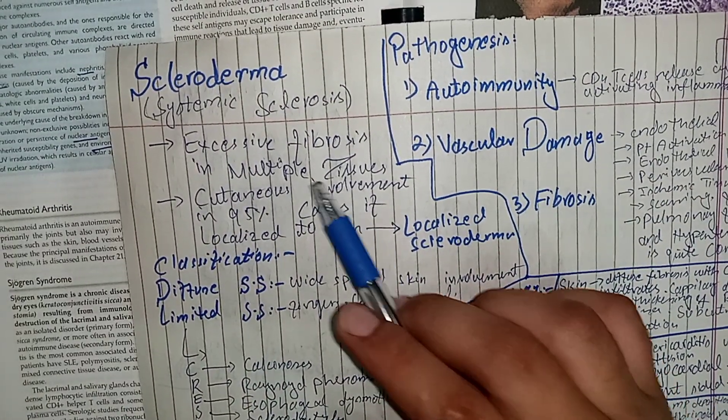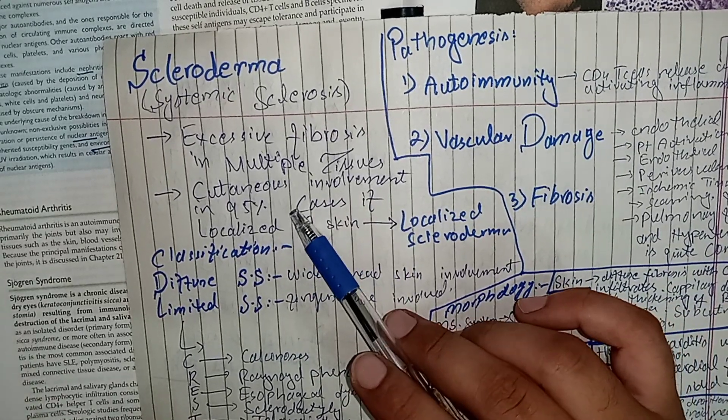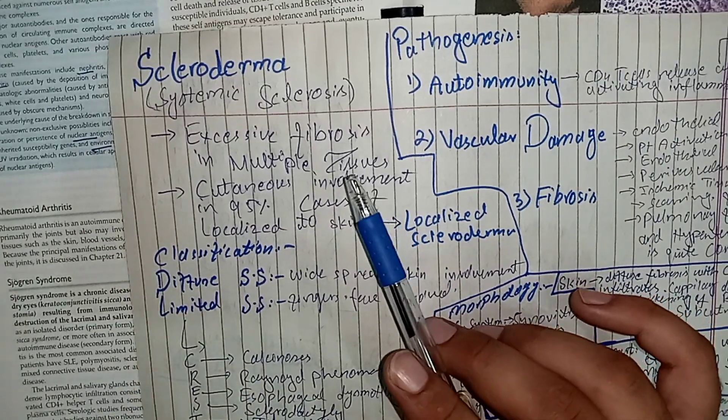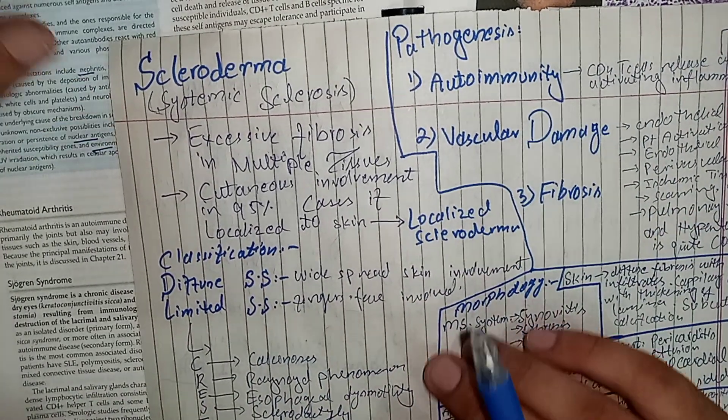It is characterized by excessive fibrosis in multiple body tissues. However, cutaneous involvement is in about 95% of the cases. However, if this disease remains localized to skin only, it is called localized Scleroderma.